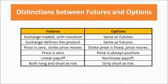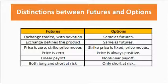If you see the payoff we saw in the previous videos, in futures, it is a linear payoff — very simple to understand. For a buyer of futures, if the market goes up, he is going to make a profit; if the market comes down, he is going to make a loss. For the seller of futures, if the market goes down, he is going to make a profit, and if the market goes up, he is going to make a loss.